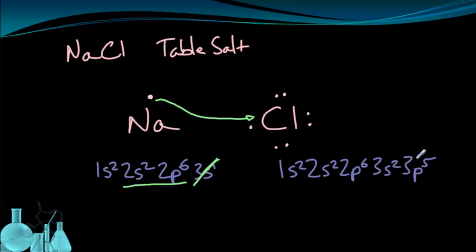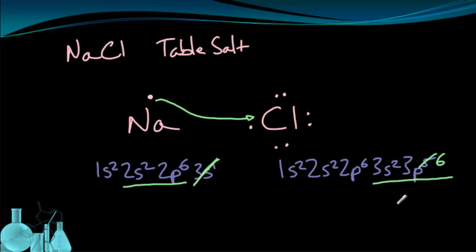Chlorine, something similar will happen. We go from 3p5 to 3p6. And now the third principal energy level, S and P sublevels, are full — 2 and 6, or eight valence electrons. So these both have eight valence electrons, which means that they are satisfied. They both satisfy the octet rule.